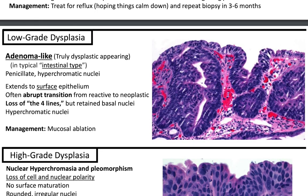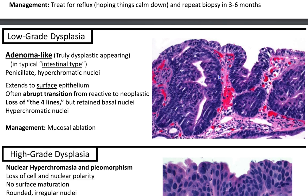Low-grade dysplasia is adenoma-like and truly dysplastic appearing in typical intestinal type. You'll have pencil-like hyperchromatic nuclei, kind of like a tubular adenoma. It extends to the surface epithelium and there's often an abrupt transition from reactive to neoplastic — it's important to know abrupt transition means dysplasia. You'll have loss of the four lines but retained basal nuclei, hyperchromaticity, and the management is mucosal ablation.